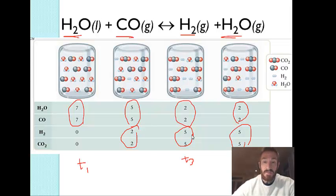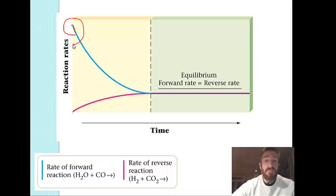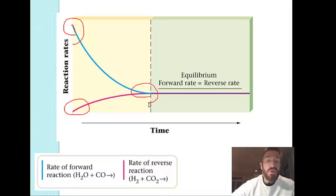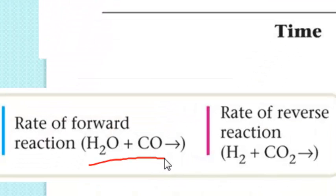Another way to look at this: when you start a reaction, the forward rate is fastest at the beginning. The light blue arrow here represents the forward rate, and the arrow at the bottom represents the reverse rate. The forward rate decreases and the reverse rate increases. At some point they meet, and when the rate of the forward equals the rate of the reverse, we say the system is at equilibrium — as when water and carbon monoxide react forward at exactly the same rate as hydrogen and carbon dioxide react in reverse.